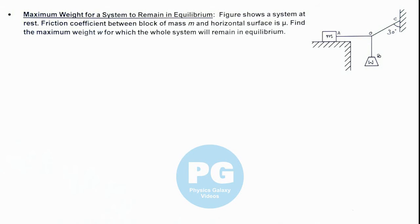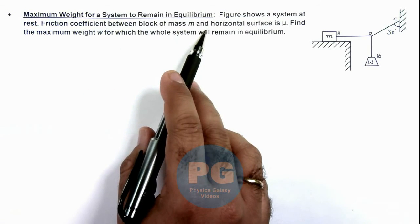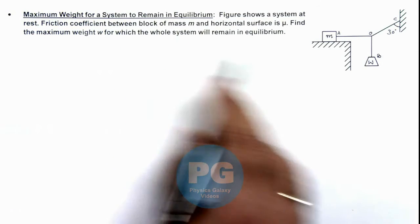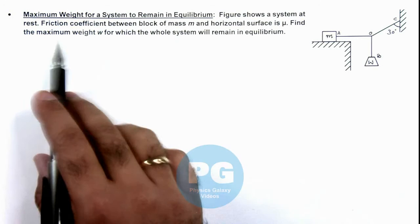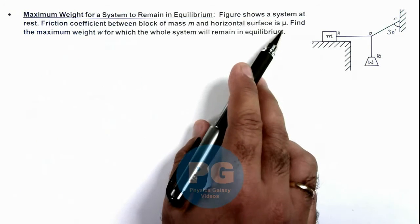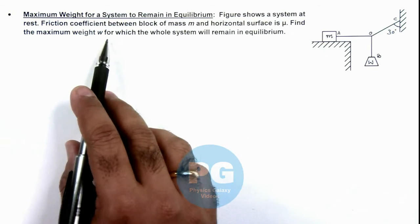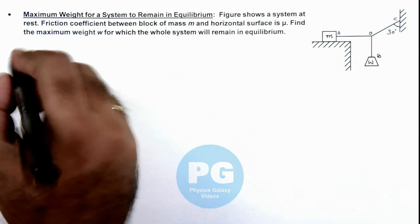In this illustration, we are required to analyze the maximum weight for a system to remain in equilibrium. The figure shows a system at rest, and the friction coefficient between the block of mass m and the horizontal surface is mu. We are required to find the maximum weight w for which the whole system will remain in equilibrium.